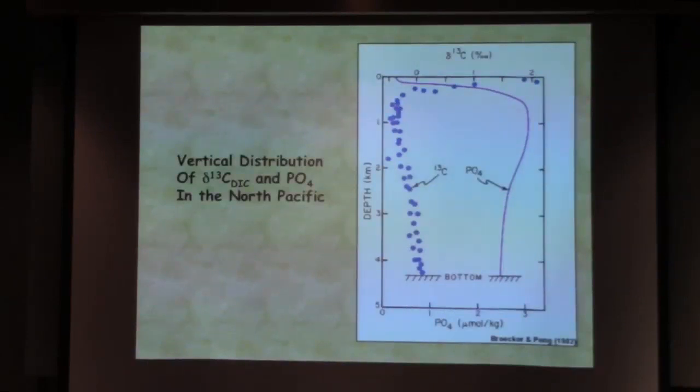Such that by the time in the North Pacific you hit about 500 to 600 meters, you have the lowest delta C-13 DIC or total CO2 values you see pretty much in the ocean. You're getting values out here that are minus a half per mil thereabouts. What you're looking at is photosynthesis and now respiration.